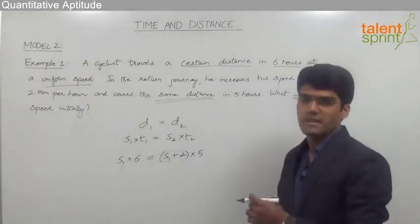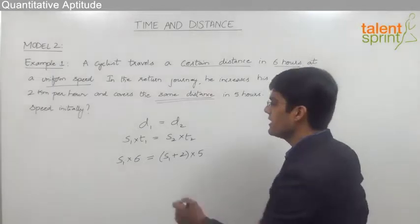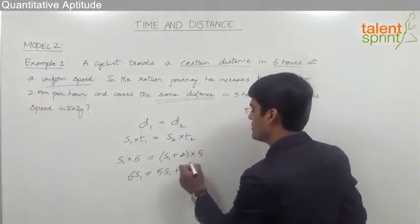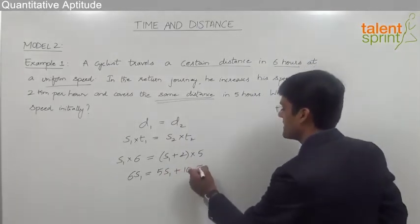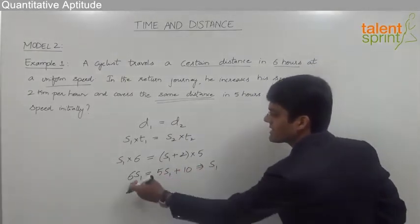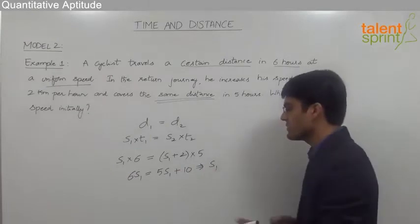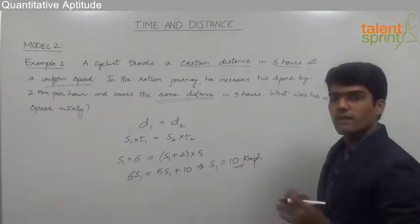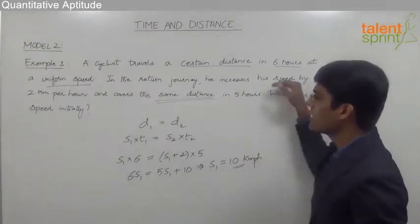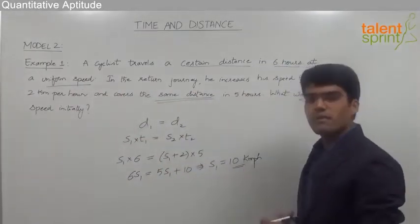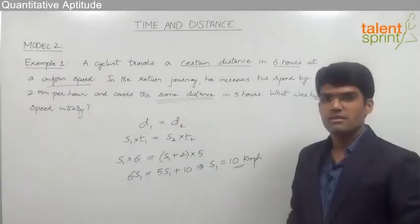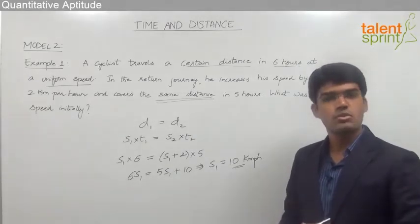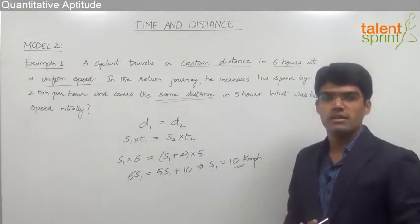By simplifying the equation we can find the initial speed. Six s1 equals five times (s1 plus 2), which gives ten. So six s1 minus five s1 equals 10, therefore s1 equals 10 kilometers per hour. The units mentioned in the question are kilometers per hour, so the initial speed obtained is 10 kilometers per hour. This is how we solve these questions by equating the distances in the two cases.